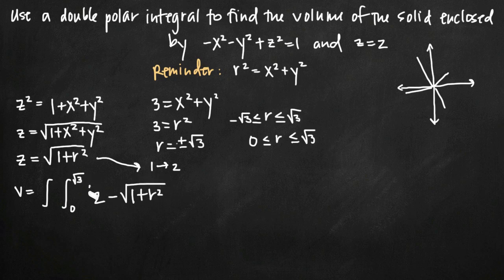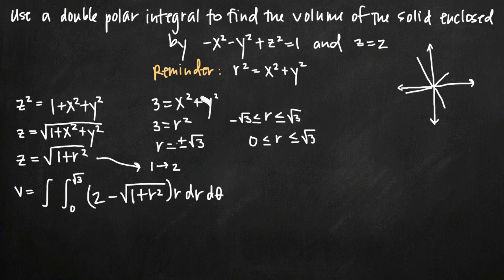Remember that with polar integrals we always include r dr dθ, so we multiply everything by r and add dr dθ. We integrate first with respect to r, so the inner integral has limits 0 to square root of 3 for r. The outer integral has limits with respect to theta. Since x squared plus y squared equals 3 is a full circle, and in polar coordinates a full circle spans from 0 to 2π, our limits of integration for theta are 0 and 2π.